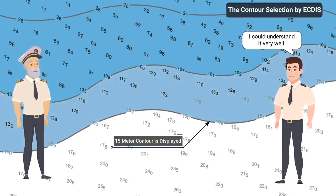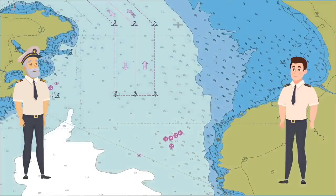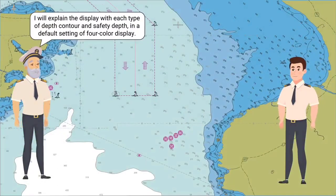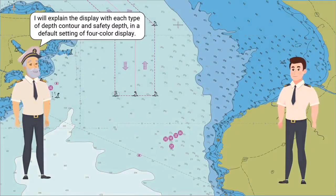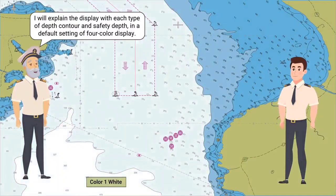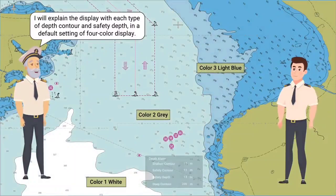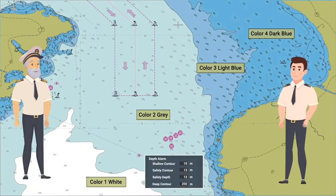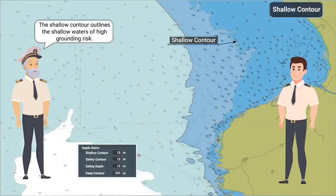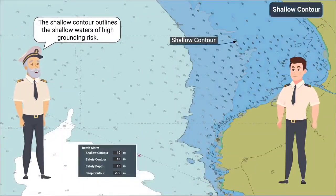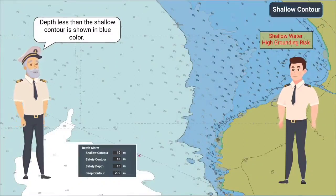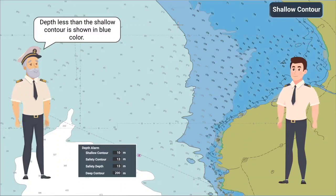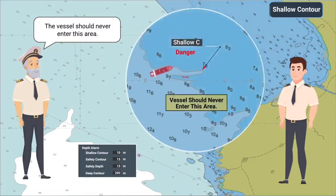I could understand it very well. I will explain the display with each type of depth contour and safety depth in a default setting of four-color display. The shallow contour outlines the shallow waters of high grounding risk. Depth less than the shallow contour is shown in blue color. The vessel should never enter this area.